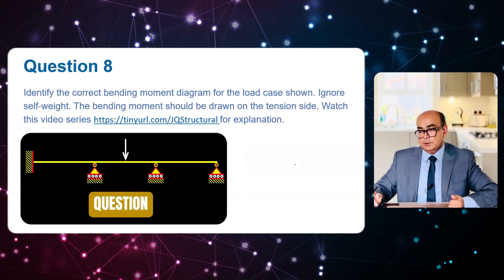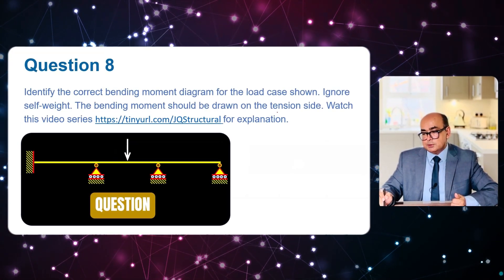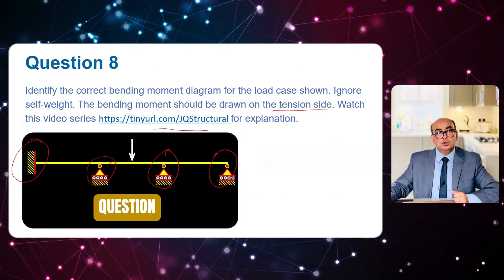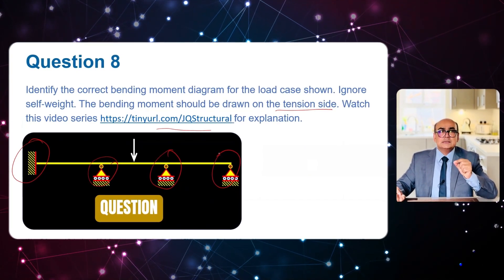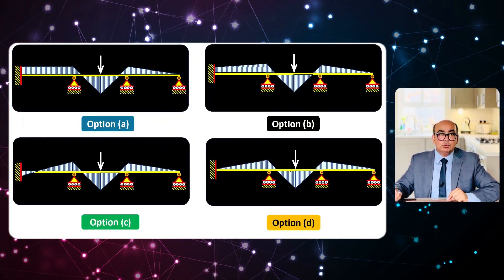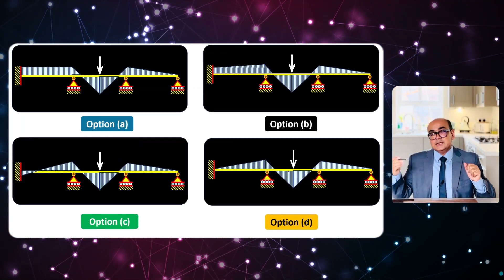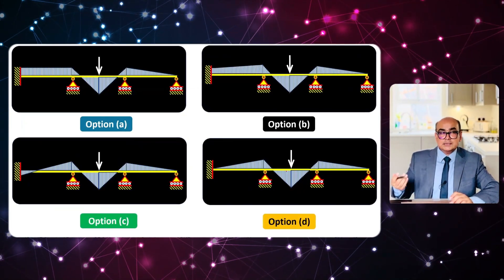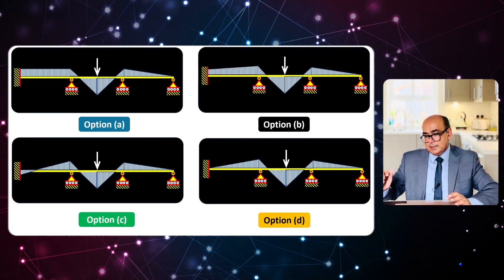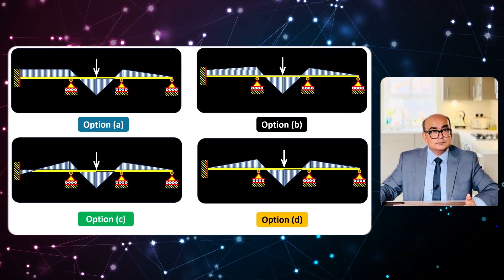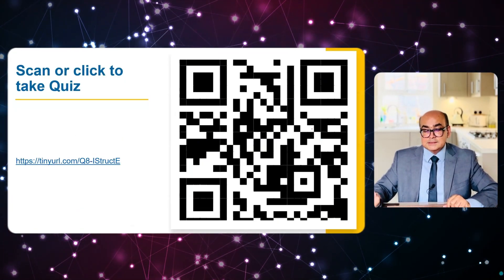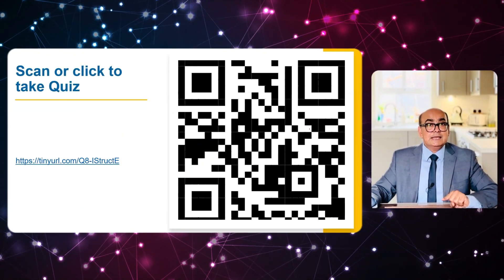The next question asks us to identify the correct bending moment diagram for the structure shown, ignoring self-weight. The bending moment should be drawn on the tension side. We have a fixed support on the left, three roller supports, and a load applied. Pause the video now, take the quiz, or use your notebook to determine which option is correct.